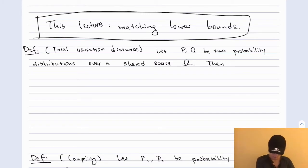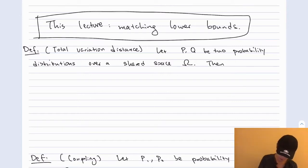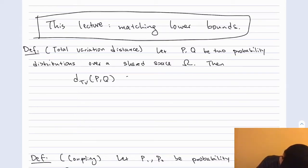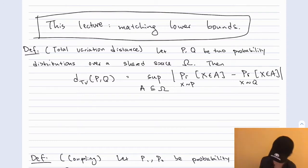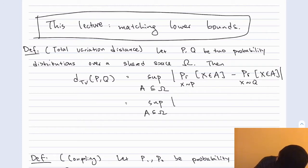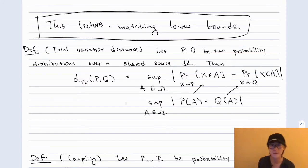So what is it? Definition: let P and Q be two probability distributions over a shared probability space omega. Then the total variation distance between P and Q, denoted D_TV(P,Q), is the supremum over all events A of |P(A) - Q(A)|, where P(A) is the probability that X drawn from P lands within A, and Q(A) is the same for Q.